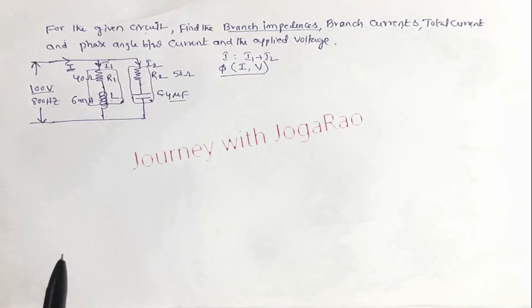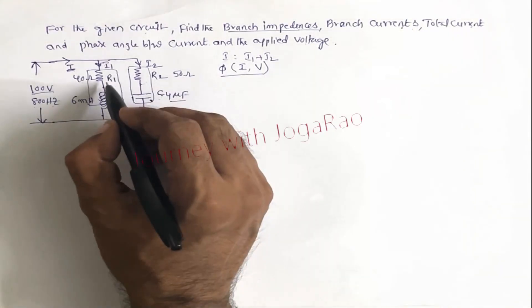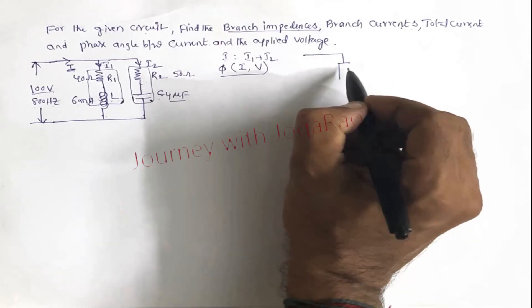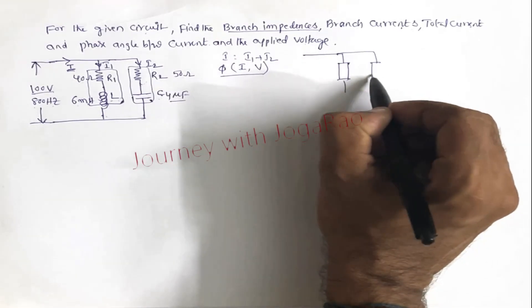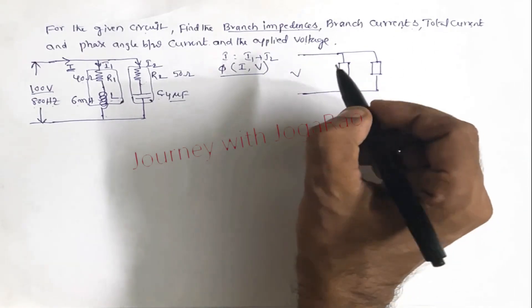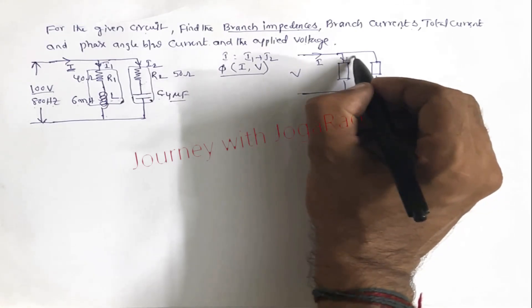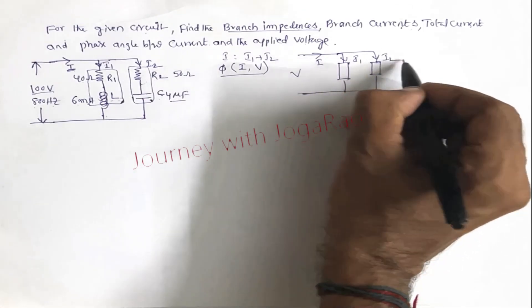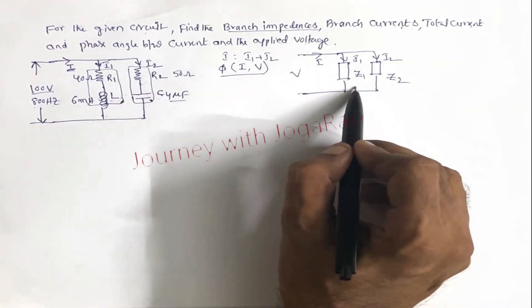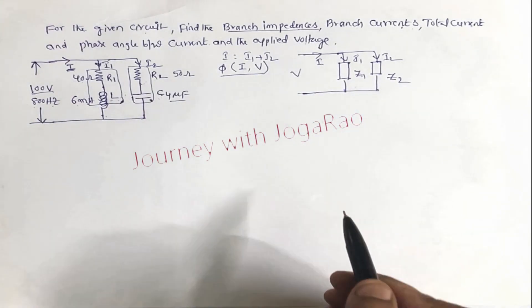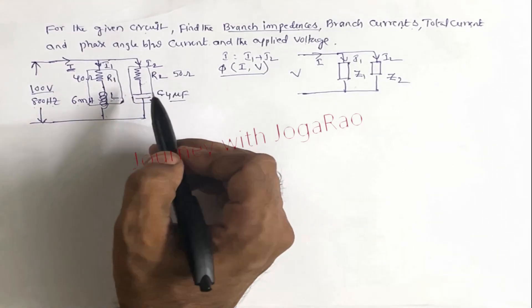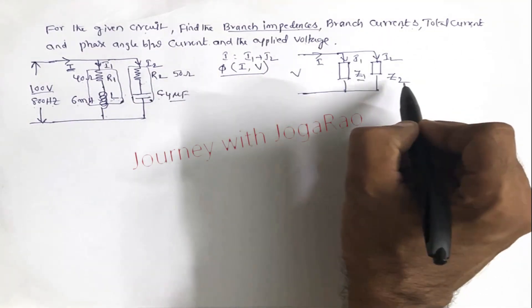Basically, when a circuit is given, how to find the branch currents is simple. This is one impedance, this is another impedance. In AC analysis we call it impedance. Suppose this is voltage. This is total current, this is i1, this is i2. This is z1 and z2. This problem and that problem, there's no difference. They're both equal. Here we have individual resistance, inductance, capacitors. Simply we call them z1 and z2.